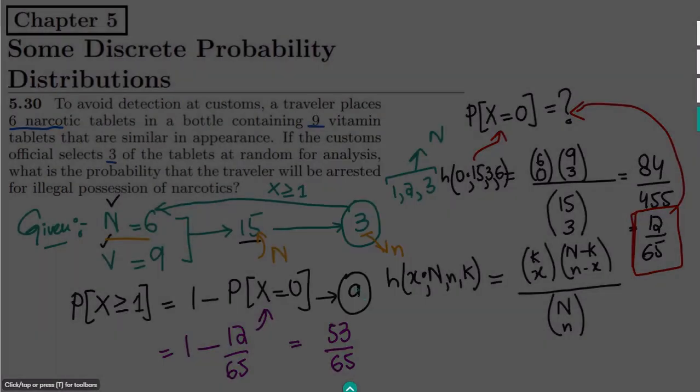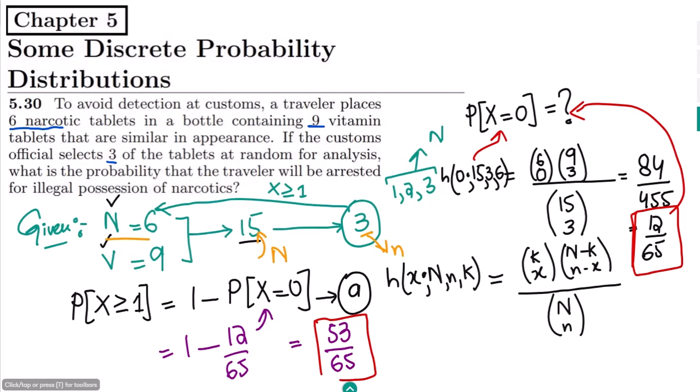So it would be 53 divided by 65, and that is basically the solution of question 5.30, because we have seen how to formulate the strategy for finding out the required quantities. This is by using this formula for the value of X equal to 0, and this is by this because this is the hypergeometric probability distribution.